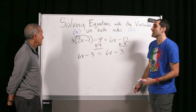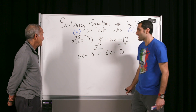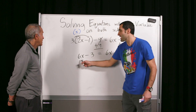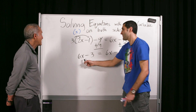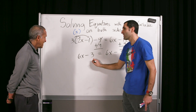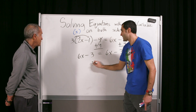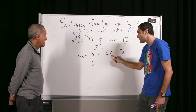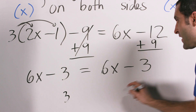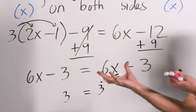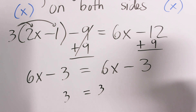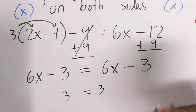Can we try? Can x be one? Let's try it. Six times one minus three is three. And six times one minus three is also three. So is there balance? Yes. So x could be one. Could x be two? Anything — you go on and on. So x could be anything.